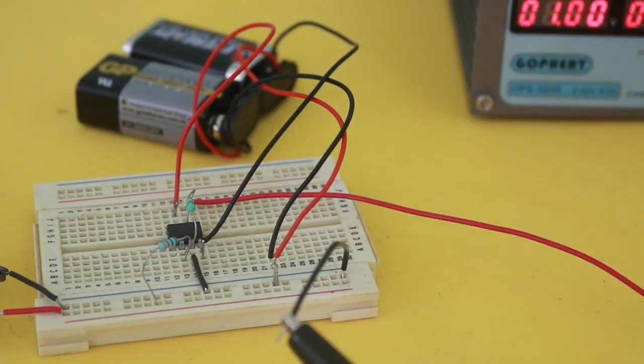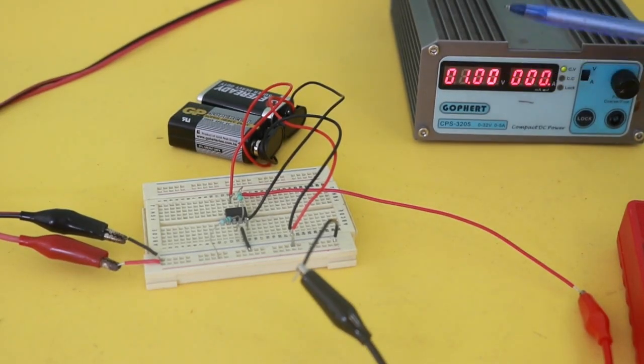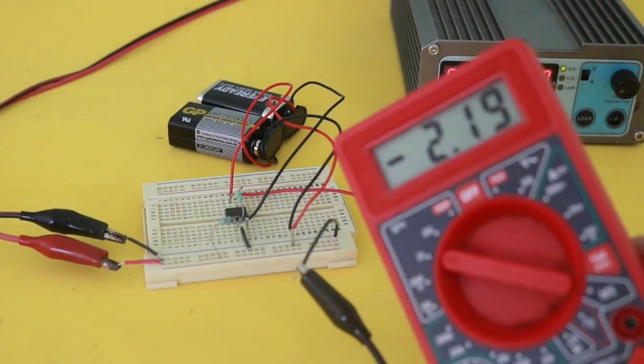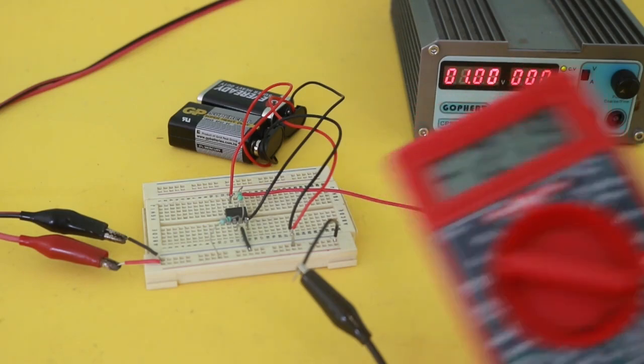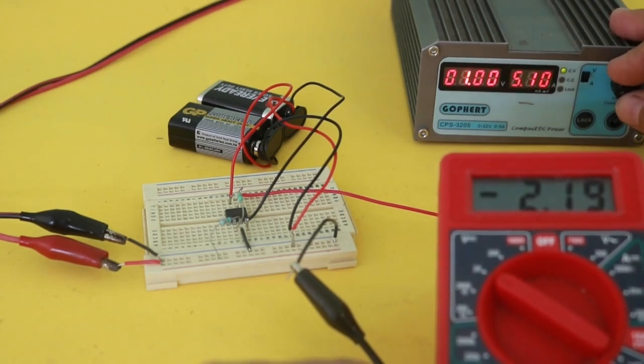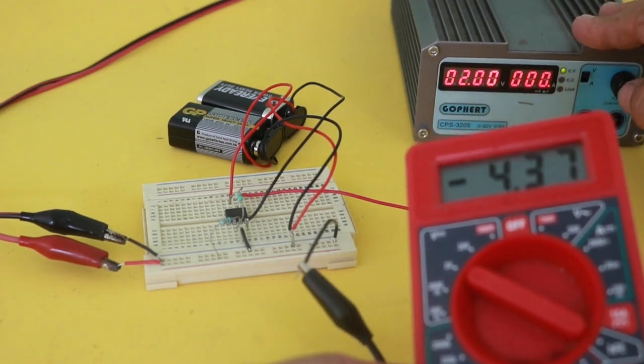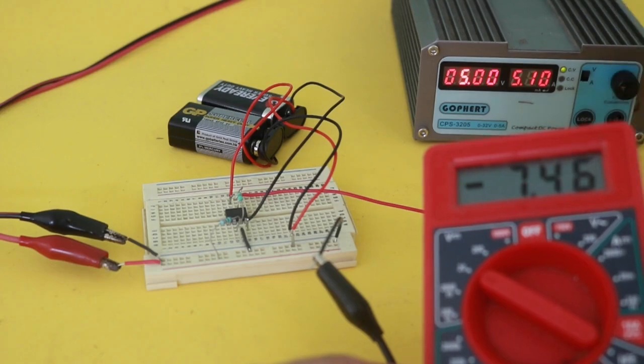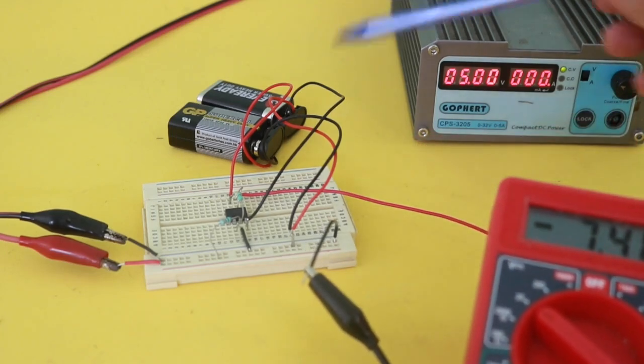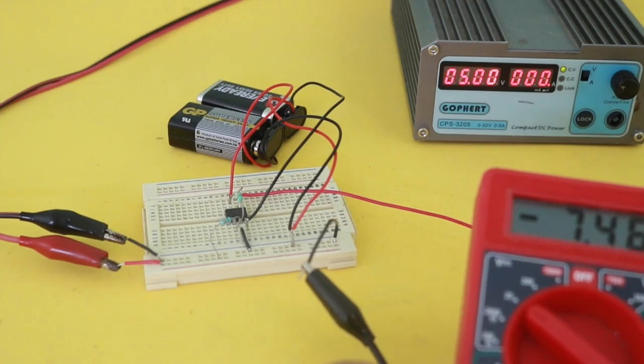So with an input voltage of 1 volt, the output should be minus 2.2. And here you have it on the multimeter. And we can vary the input voltage and the output varies with the same factor of 2.2. Of course there is a limit. For example, with 5 volts we only have this output voltage because the output voltage is limited by the value of the batteries.